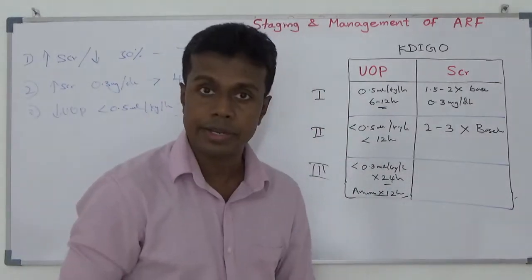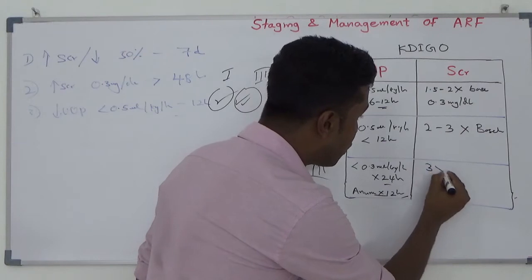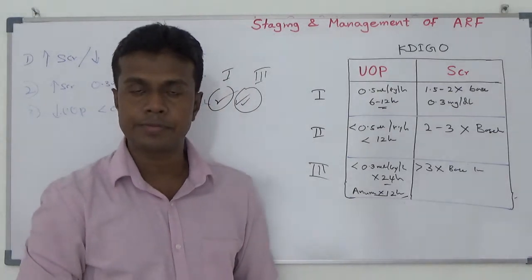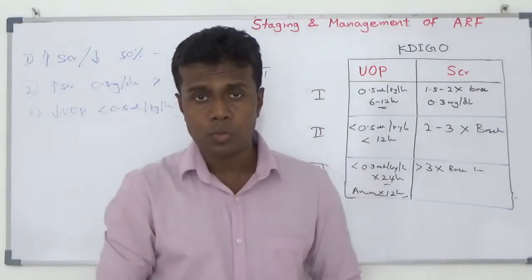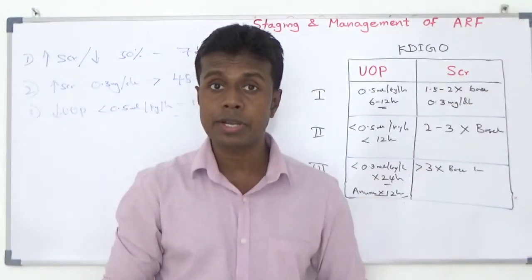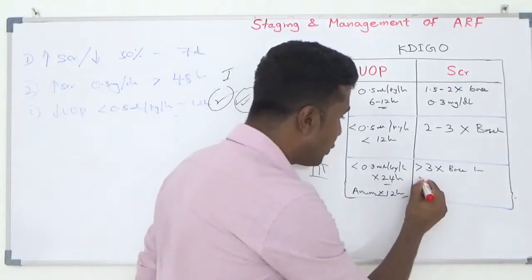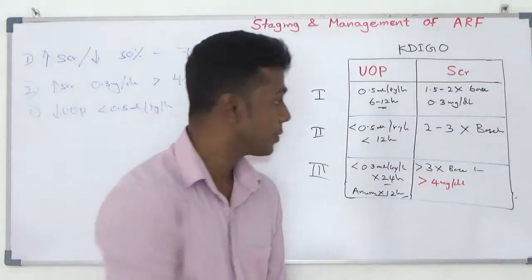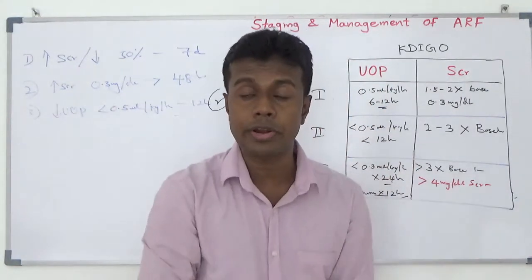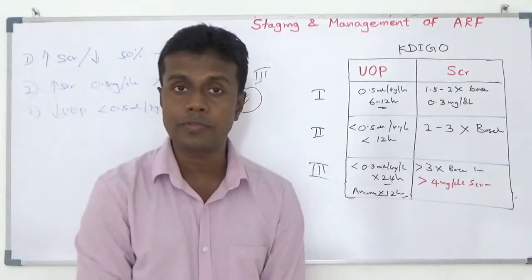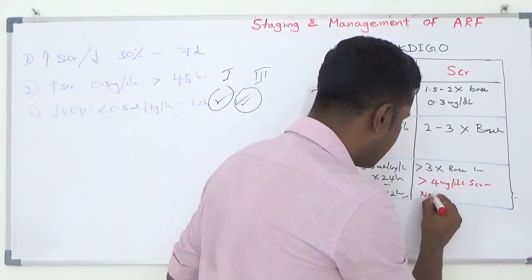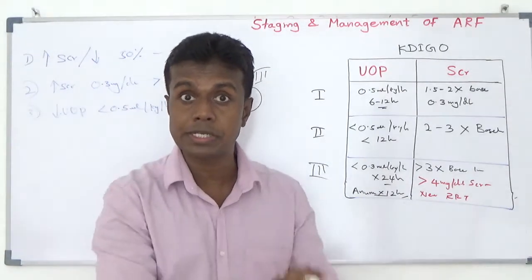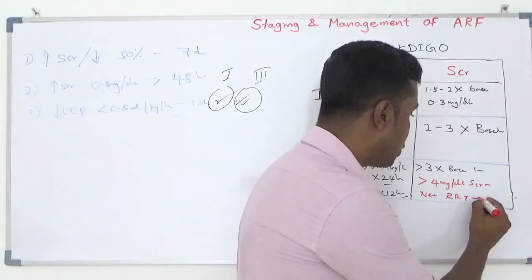For serum creatinine Stage 3 criteria: elevation more than 3 times from baseline value; or if baseline is unknown but the patient has acutely deteriorating with serum creatinine more than 4 mg per deciliter — until chronic renal failure is excluded, manage as acute renal failure. Or if your patient needs renal replacement therapy — dialysis, hemofiltration, or diafiltration — that patient is Stage 3.